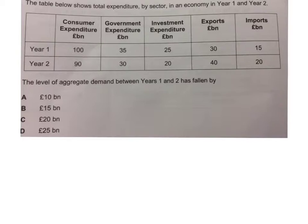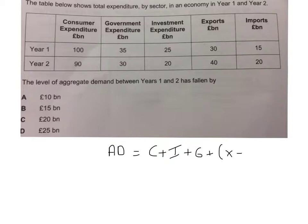All they're trying to test is whether you know what the components of aggregate demand are. Aggregate demand equals C plus I plus G plus X minus M. The important thing here is that imports are a minus on aggregate demand. So whatever happens with the imports, it's going to be a minus. That's the key point.